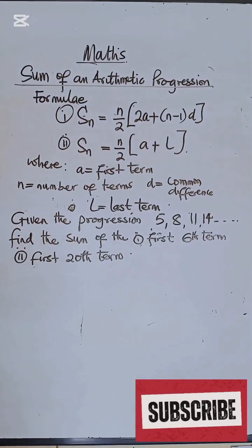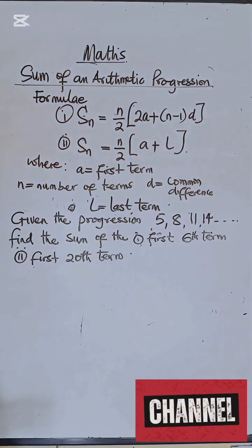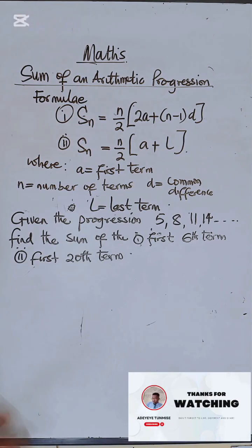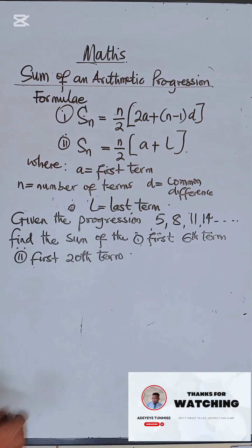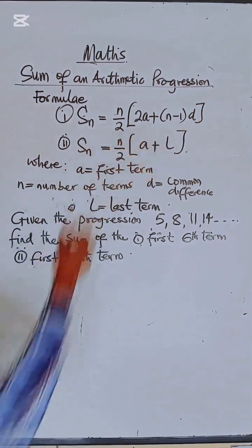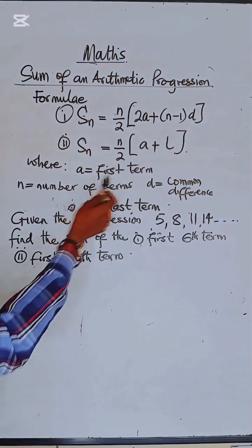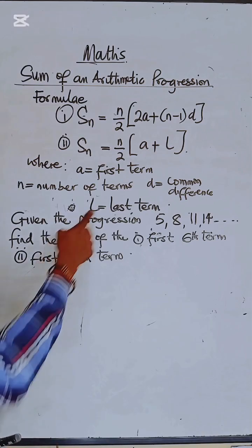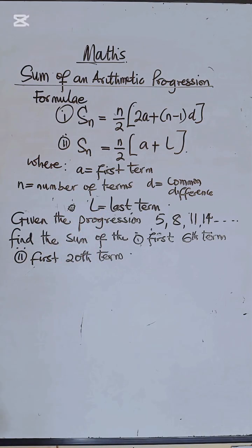Today we are looking at the sum of an arithmetic progression. In this topic we are going to consider two formulas, although we will make use of one of the two. The sum of the first N terms of an AP is given by the formula on the board, where A is the first term, N is the number of terms, D is the common difference, and L is the last term.